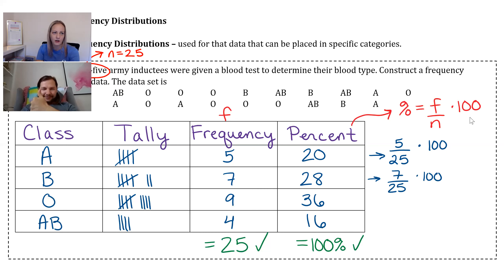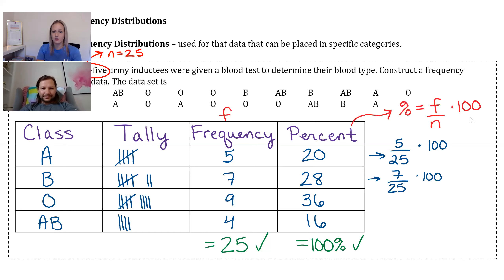If your percentages were very far off from 100, that would tell you something went wrong with your math. And that's a categorical frequency distribution.